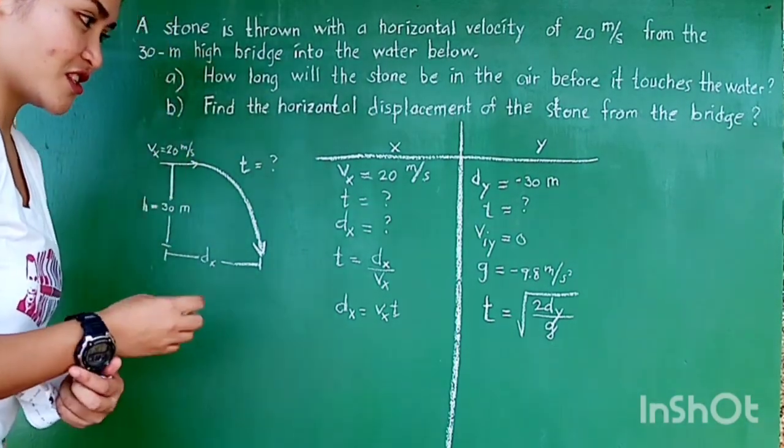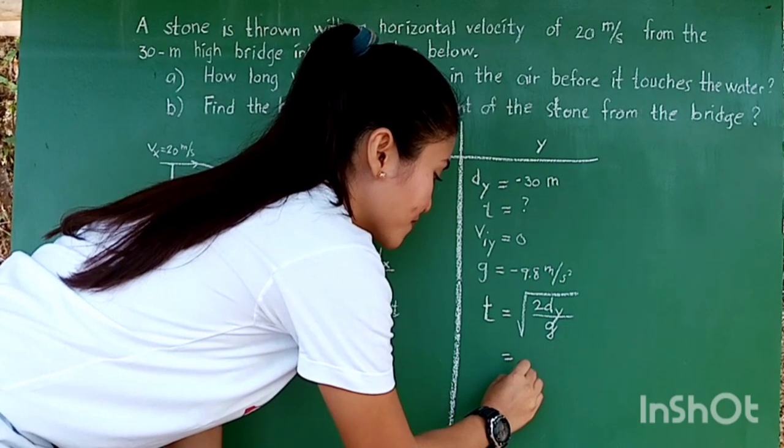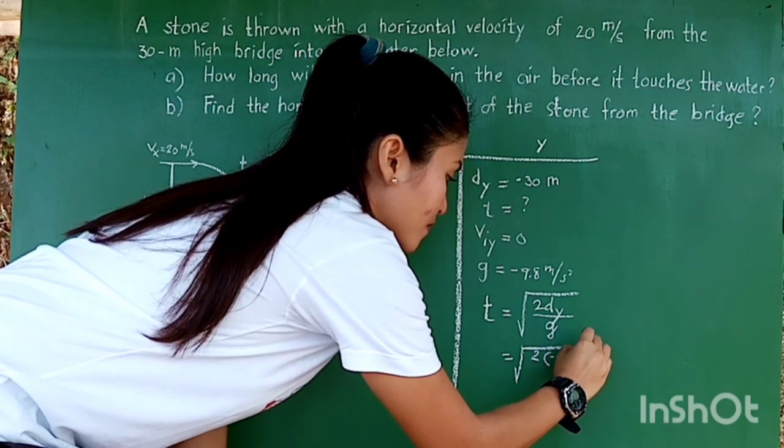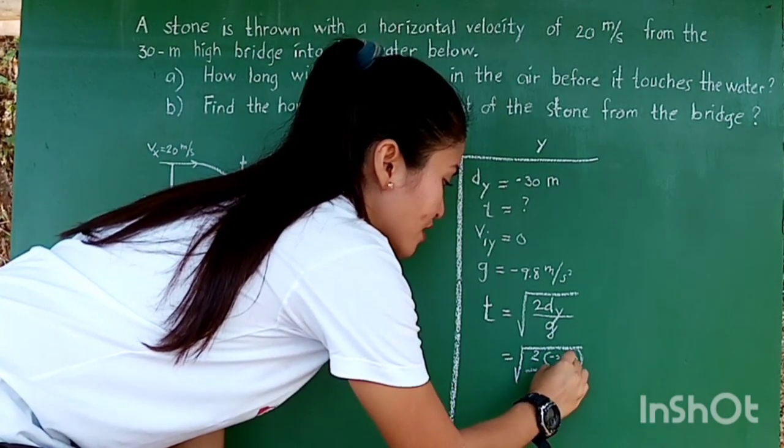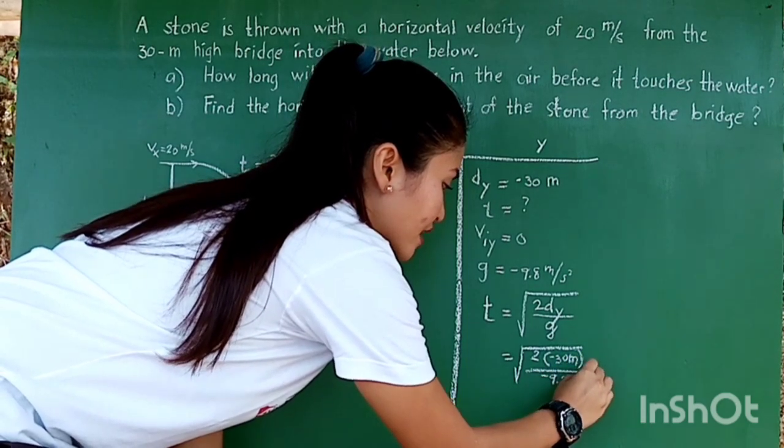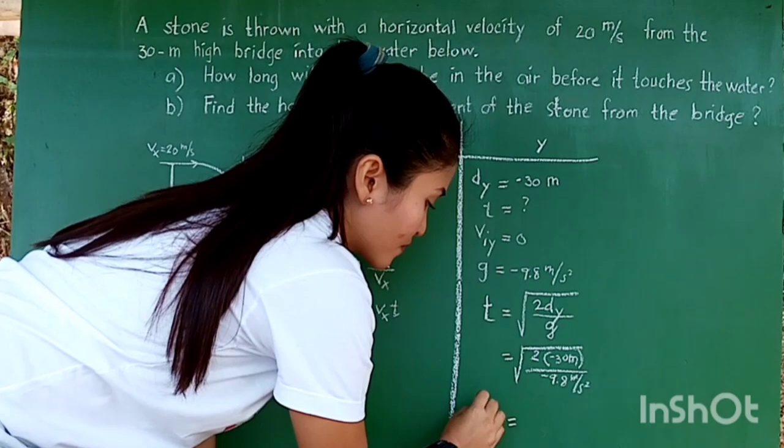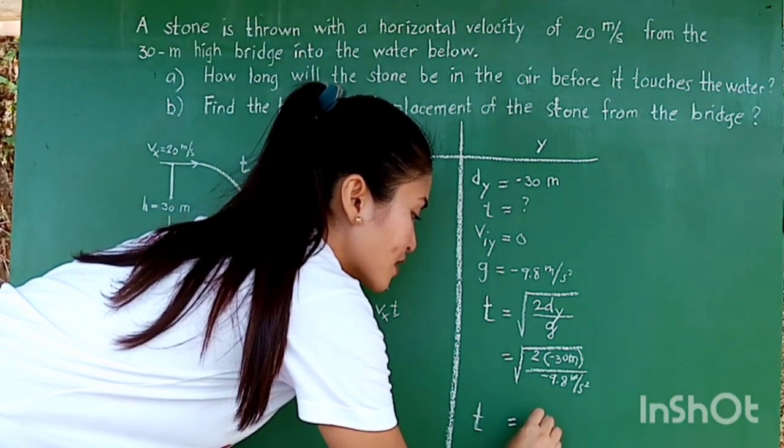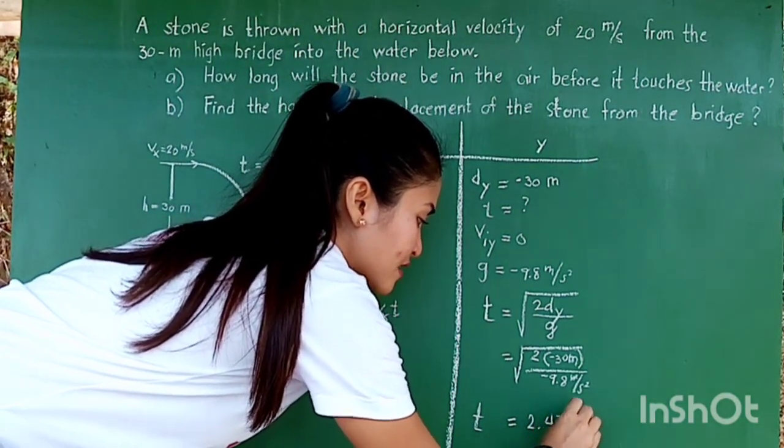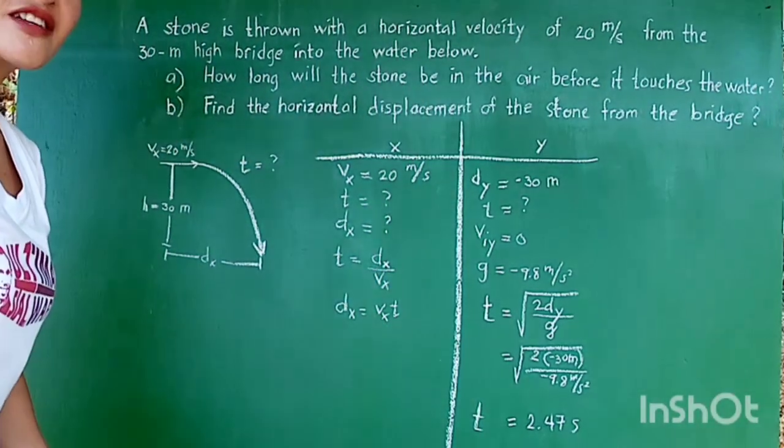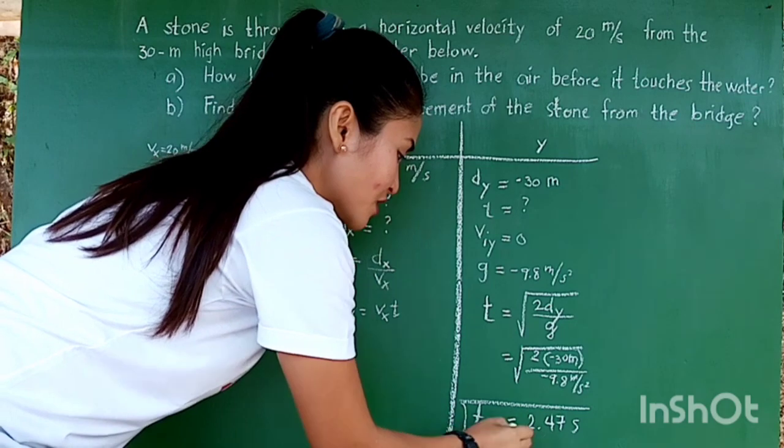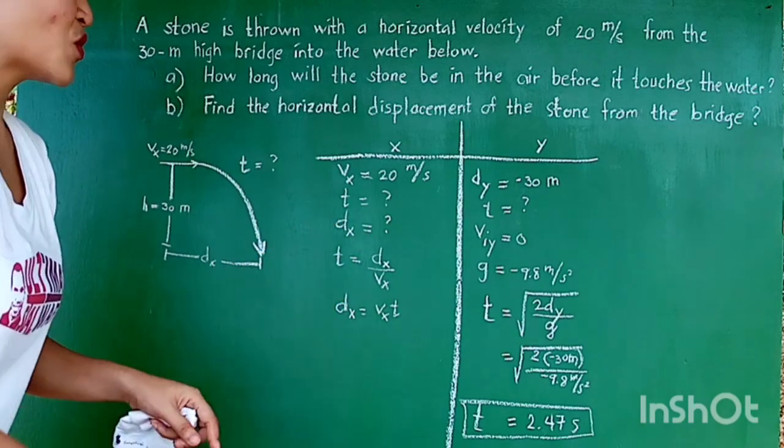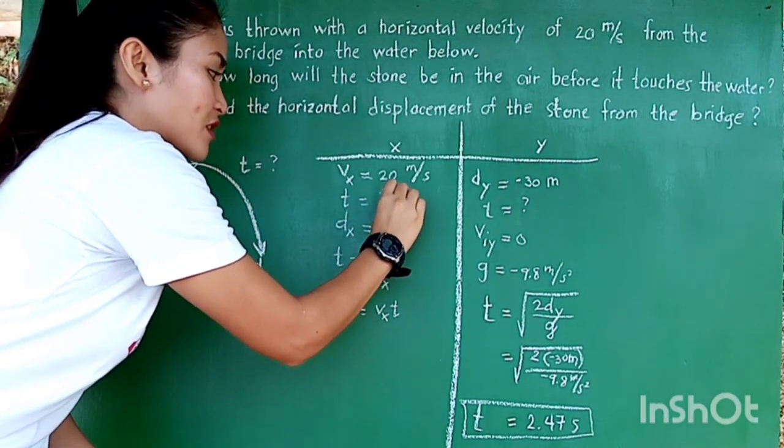So let's now substitute the values to solve for T. Our DY is negative 30. And our G is negative 9.8 meters per second squared. So the square root of these numbers is equal to 2.47 seconds approximately. I'm just rounding it off to two decimal places. Now that we have the value for time in the Y component, since T in the Y is equal to the T in the X, we will just copy the value 2.47 seconds here.